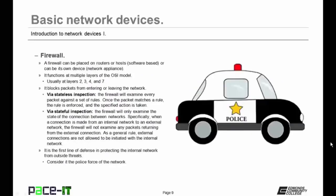Speaking about firewalls, a firewall can be placed on routers or hosts—this would mean that it would be software-based—or a firewall can be its own device, usually a network appliance. Firewalls function at multiple layers of the OSI model; usually you will find them operating at Layers 2, 3, 4, and 7.